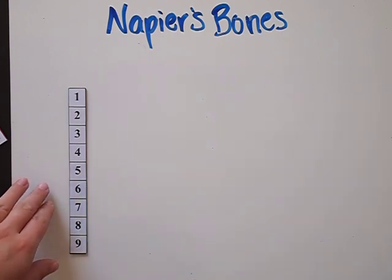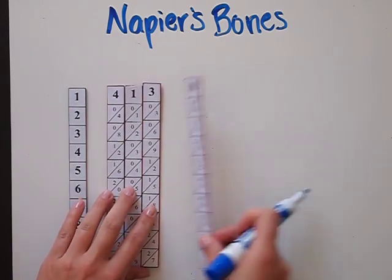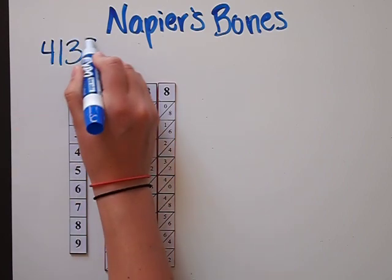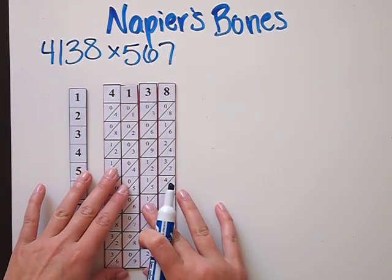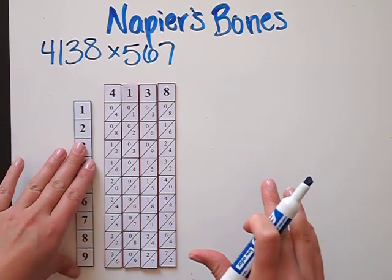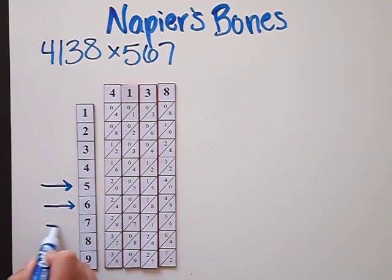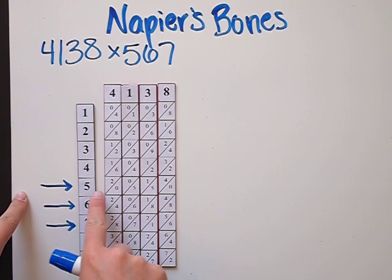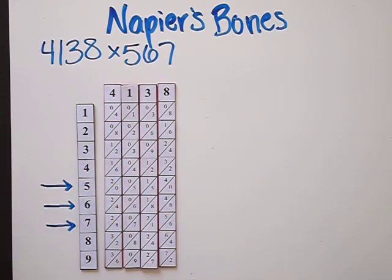Now let's do a slightly harder product. I'm going to multiply 4,138 by 567. You might ask where we're getting 567 from — what we can do is examine the fifth, sixth, and seventh rows, because we're going to break it down and multiply 500 times 4,138, then 60 times 4,138, then 7 times 4,138, and add them all together.